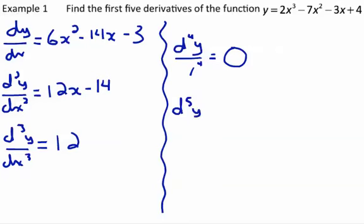The fifth derivative, now we're taking the derivative of the fourth derivative. Derivative of 0 is, again, 0.